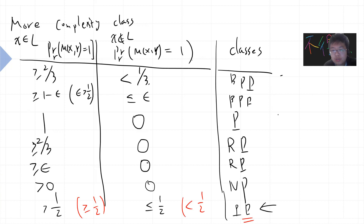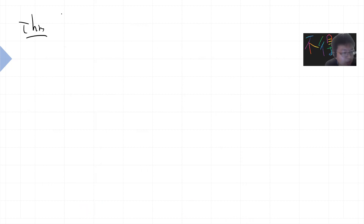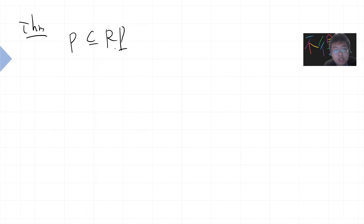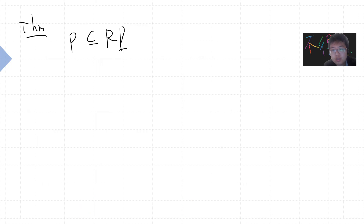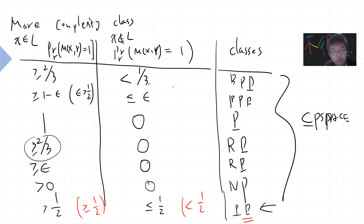Obviously, every one of these belongs to a subset of PSPACE. A very trivial theorem: P is a subset of RP — just by definition, since P gives probability one, which is greater than or equal to epsilon. And RP is a subset of BPP, since BPP is two-sided and RP is one-sided, so BPP is more general. Also, RP is a subset of NP.